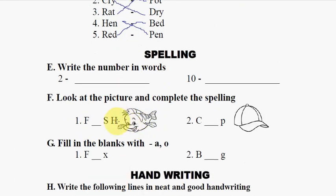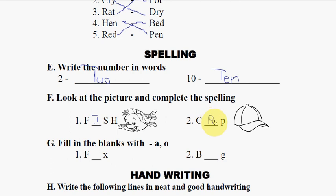Next is the spelling section: write the number in words. Here, for example, 2 is written and the student will write it out, up to 10. Then look at the picture and complete the spelling — the student will be able to write words like 'fish' and 'calf.' You can first provide the worksheet, and then display this video so that the student can better understand how to fill it up.